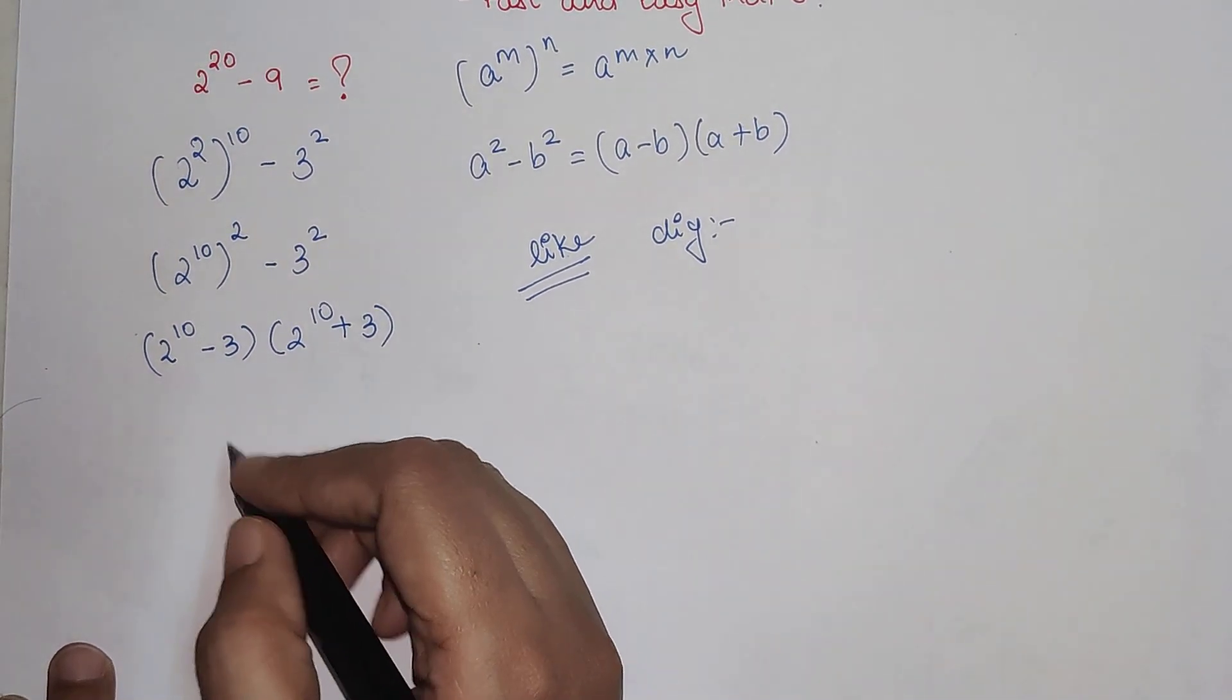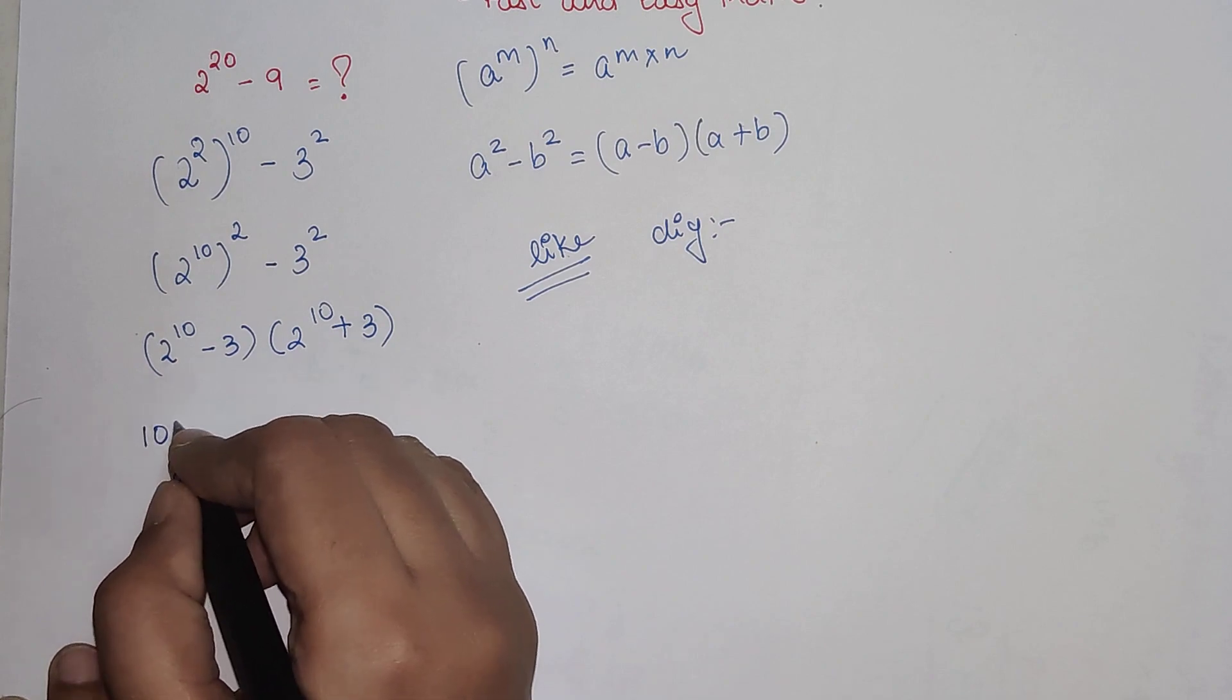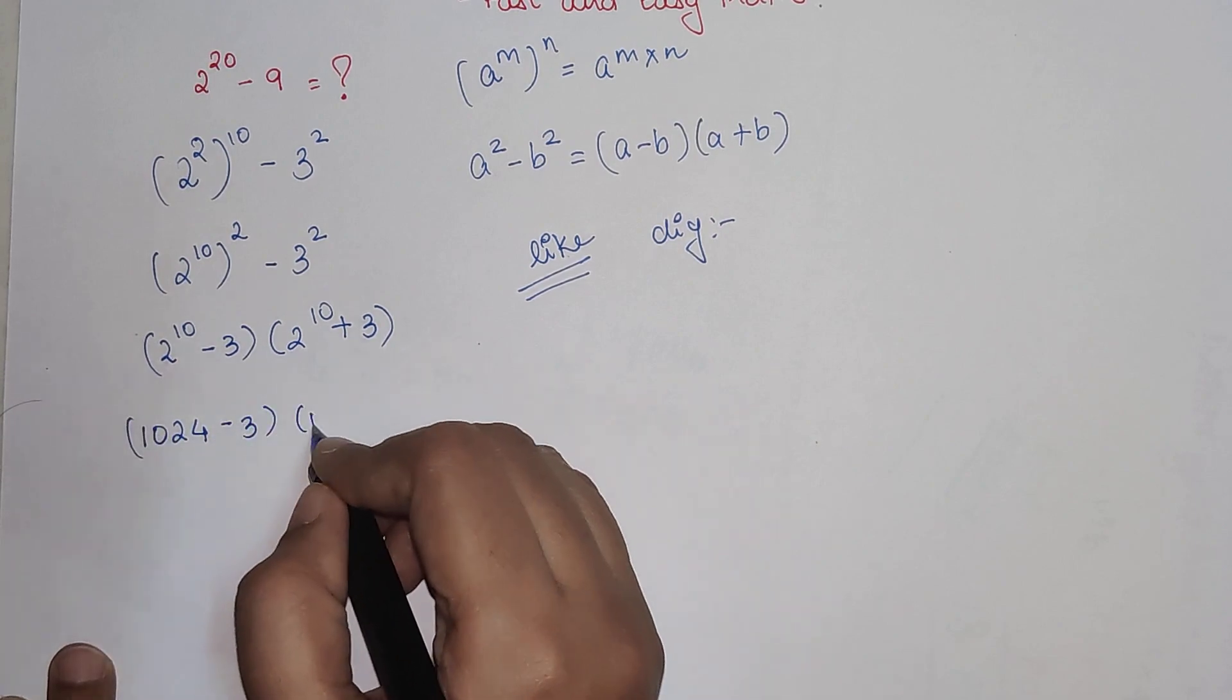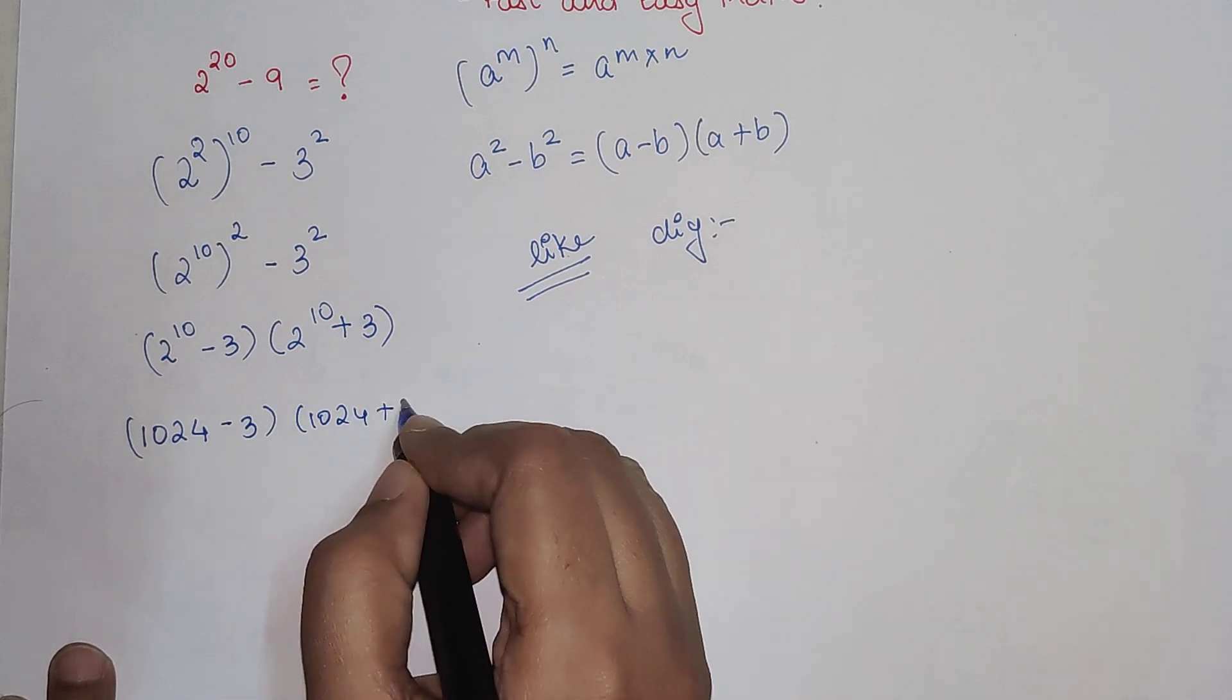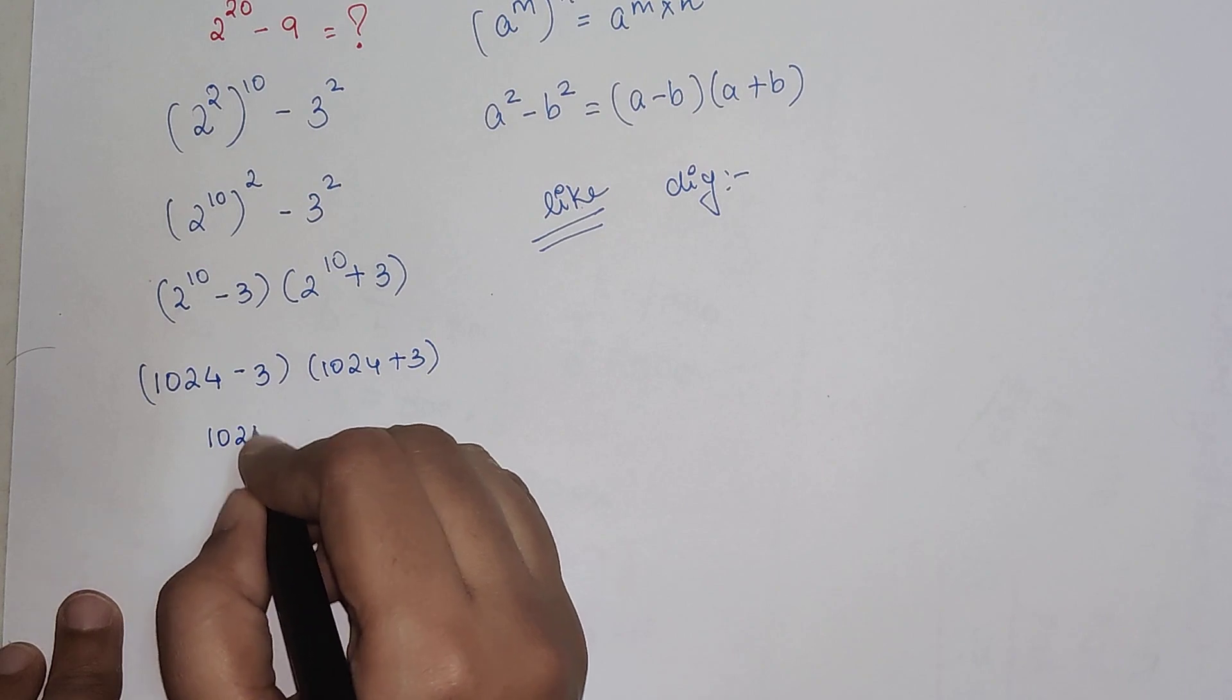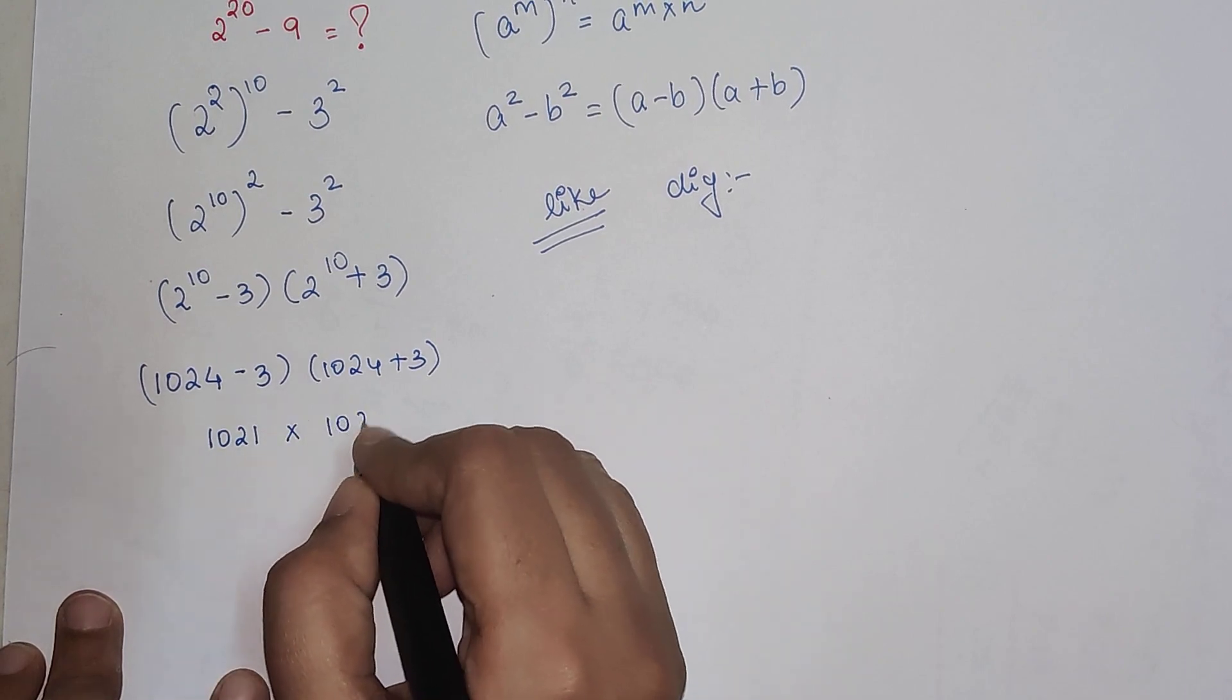So what is 2^10? 2^10 is 1024. So we have (1024 - 3) × (1024 + 3).